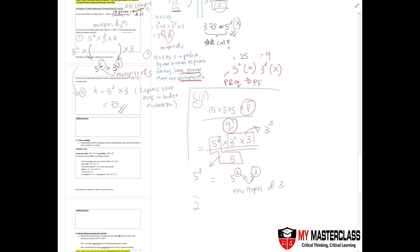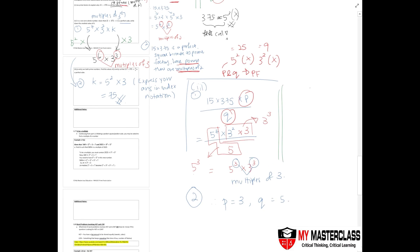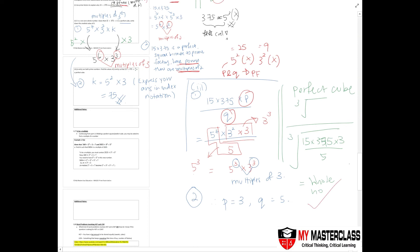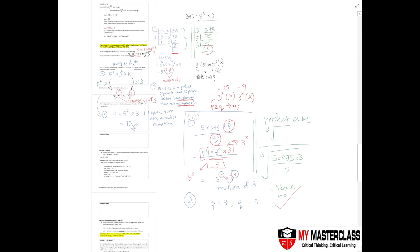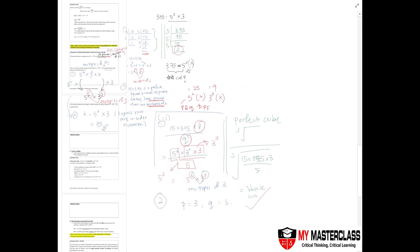Therefore, p equals 3 and q equals 5. To check your answer, take the cube root of 15 times 375 times 3 divided by 5 on your calculator. If it gives a whole number, your answer is correct. Always check your answer and take note of the errors you are most likely to make, so you can solve questions accurately within the time limit.